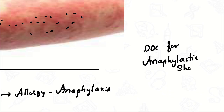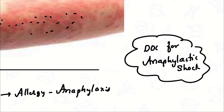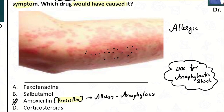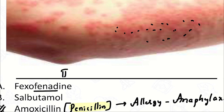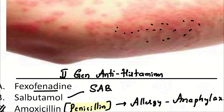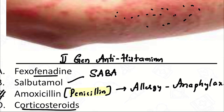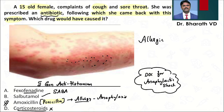Tell me the drug of choice for anaphylactic shock — the dilution, dose, route, and the muscle used to give the injection — in the comment section. Fexofenadine is a second-generation antihistamine used to treat allergies, so it will not cause allergy. Salbutamol is a SABA used in asthma. Corticosteroids are anti-inflammatory immunosuppressants — in fact, we use antihistamines, steroids, and adrenaline to treat allergy. So the answer is amoxicillin, a penicillin group drug.